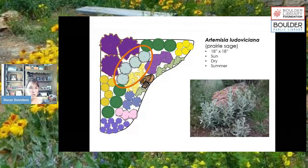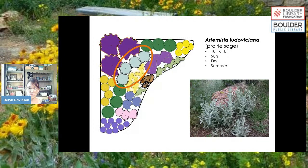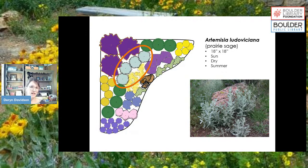Moving to the middle, we have Artemisia ludoviciana, prairie sage. When thinking about garden design, it's good to have some areas that aren't blooming — filler plants like grasses or an Artemisia that is lovely but just gray. It gives your eye a chance to rest and looks more naturalistic rather than wall-to-wall blooming things. Prairie sage is great for that role.